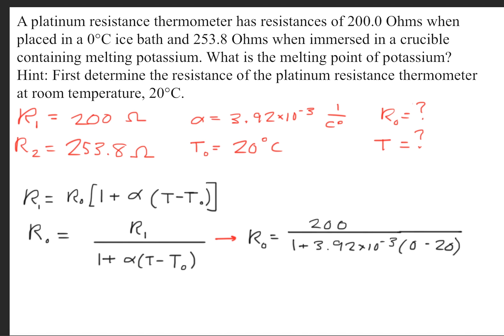And using the given information here, with R sub 1 being 200 ohms, and we know our alpha, this T right here will be the reference temperature, which will be 0 degrees Celsius, and our T0 is 20 degrees Celsius. So this gives us an R0 of 217 ohms.